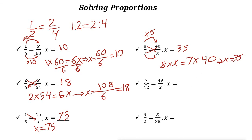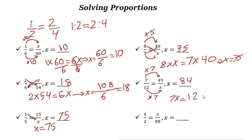Next one. Here you can see that 7 changed to 49, so it multiplied by 7. You need to do the same thing for the denominator — 12 times 7 is 84. You could also use cross multiplication: 7 times x equals 12 times 49. If you divide both sides by 7, then x is 84.